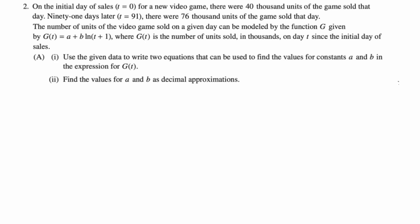First up, we want to use the given data to write two equations that can be used to find the values of a and b. So first, what you want to do is read through and pull off ordered pairs. So you got 0, 40 is one of our ordered pairs. And remember, the units are thousands of units. So it's 40 and then thousands of units. And then we also have 91, 76,000. So that'll be 91 comma 76. We need to write two equations.